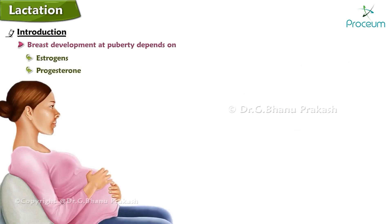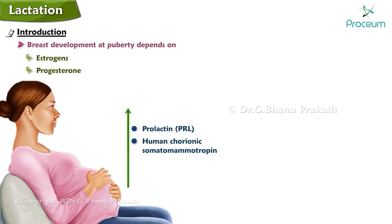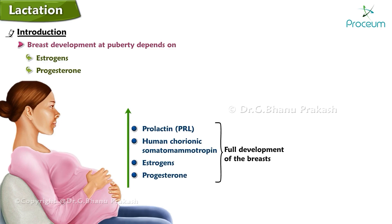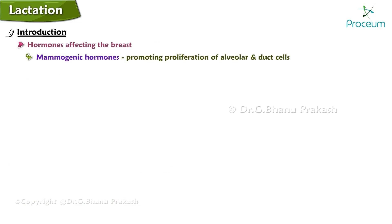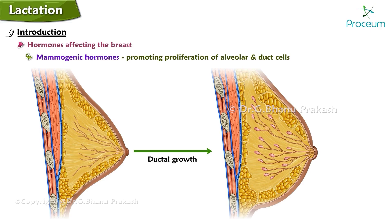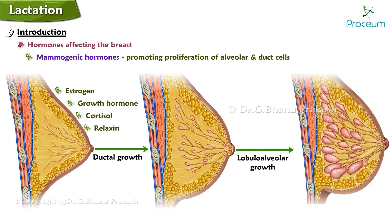Breast development at puberty depends primarily on estrogens and progesterone. During pregnancy, gradual increases in prolactin and human chorionic somatomammotropin, as well as very high levels of estrogens and progesterone, lead to full development of the breast. Mammogenic hormones promote proliferation of alveolar and duct cells: ductal growth is carried out by estrogen, growth hormone, cortisol, and relaxin; lobular alveolar growth is carried out by estrogen, growth factor, cortisol, prolactin, and relaxin.